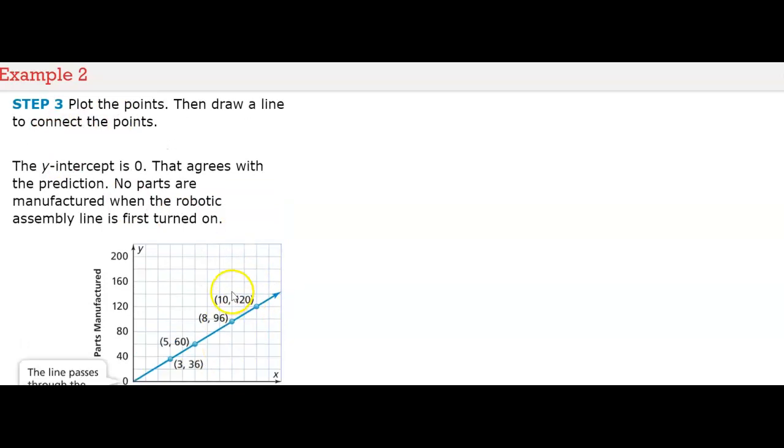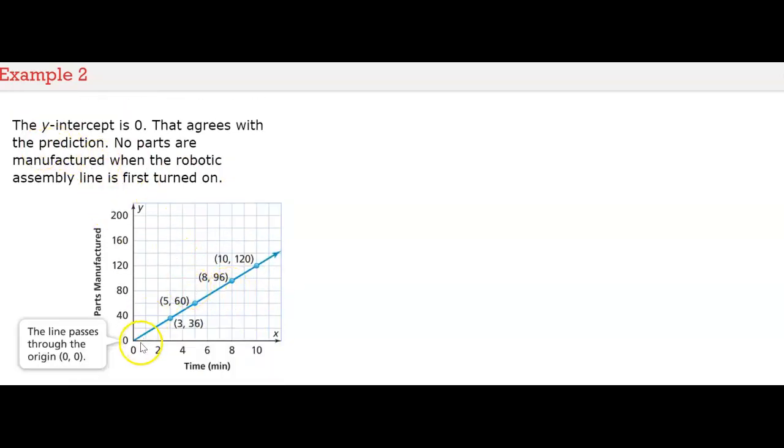The y-intercept is zero because the line passes through the origin. That agrees with the prediction that no parts are manufactured when the robotic assembly line is first turned on.